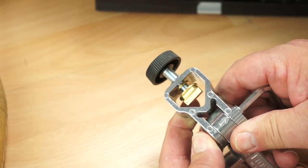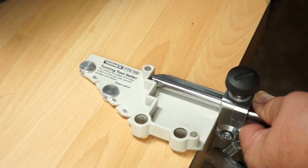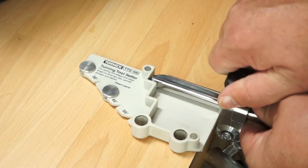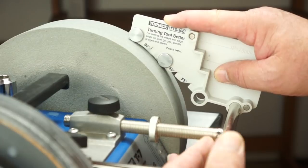Set the jig at 6, the protrusion at 75mm, and use the TTS-100.